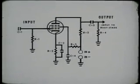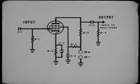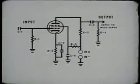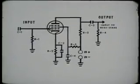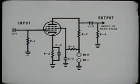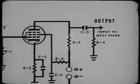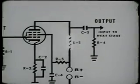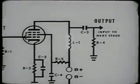The RC coupled amplifier, because of its better frequency response, is used in almost all types of amplifier circuits where broad bands of frequencies are utilized, whether they be audio, RF, or even some UHF. Now let's change the plate load resistor to an inductor and we have an impedance coupled, or LC amplifier.